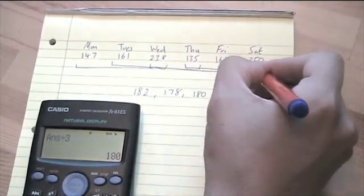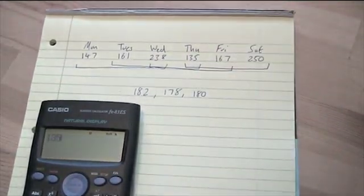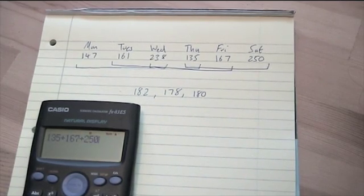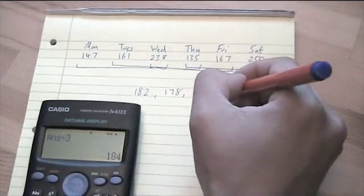I'm going to move along one again, to 135, add 167, add 250, divide by three again, so 184.